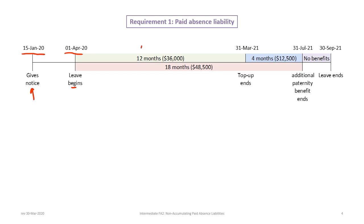In the green period on the timeline, there's a top-up that Mr. Tuvok receives from the company running from April 1st, 2020 to March 31st, 2021, at which point the top-up ends. Then there's another period of four months where additional paternity benefits are paid to Mr. Tuvok, for a total of 18 months of benefits. The first 12 months represent an additional amount to the government-funded paternity leave, then four months of additional amounts, with a two-month gap where he receives nothing. The entire leave ends on September 30th, 2021.